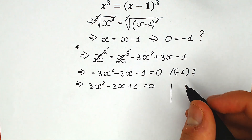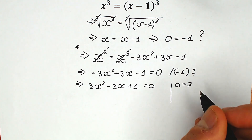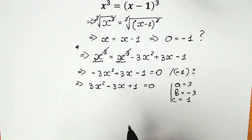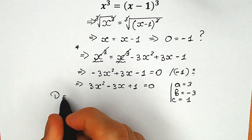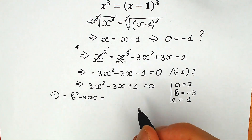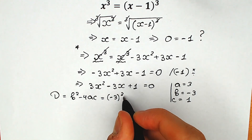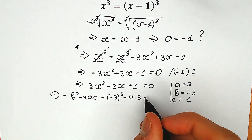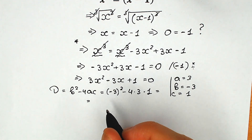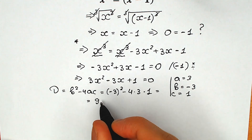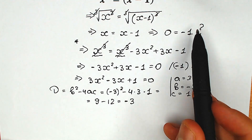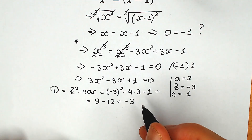Let's write all our coefficients. We have a equal to 3, b equal to minus 3, and c equal to 1. We're going to apply the discriminant. So D equals b squared minus 4ac, which is minus 3 squared minus 4 times 3 times 1. A lot of students are confused at this point. We have 9 minus 12, so our discriminant is minus 3 — negative. The discriminant is negative — what are we going to do with it? How can we find our roots?